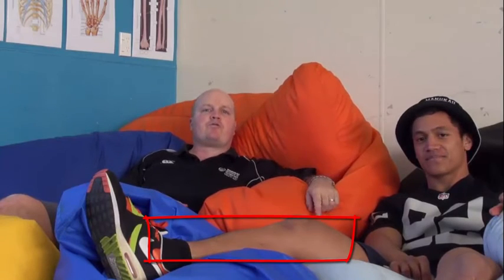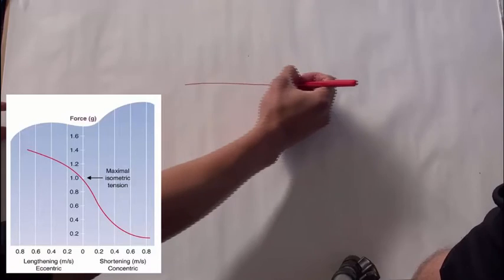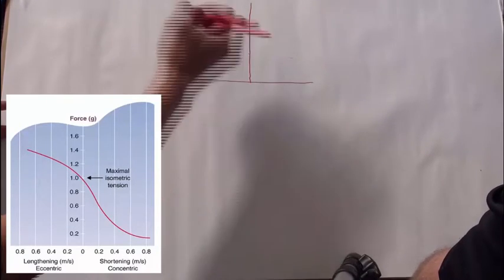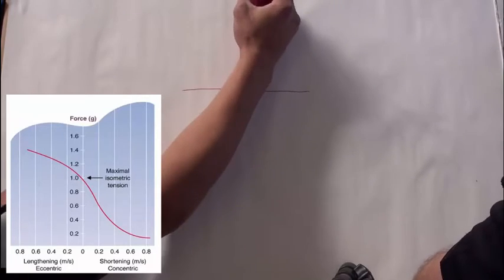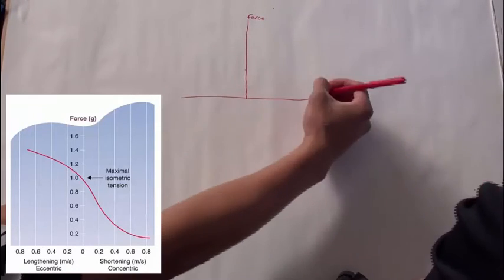So step one, let's get Luke to draw it so we see what it looks like. When we're drawing the force velocity relationship, give us some axes to start with. Alright. That will be the y and this will be the x. Good. So what should we put on this axis? This will be force. And then this one? Velocity.